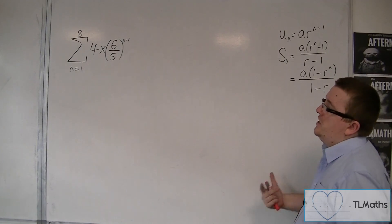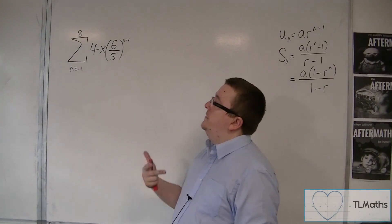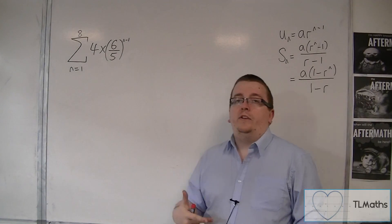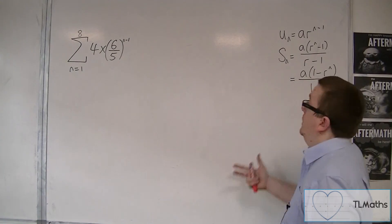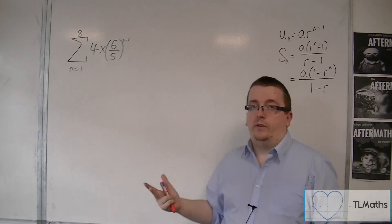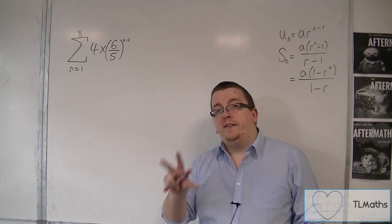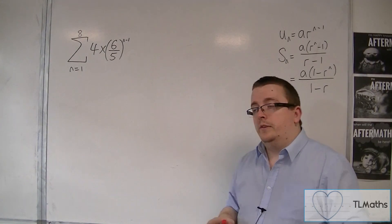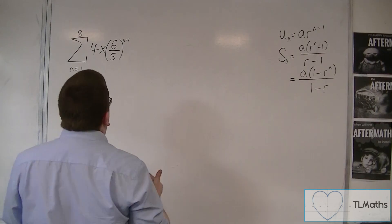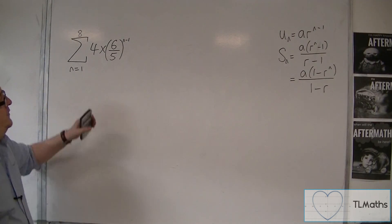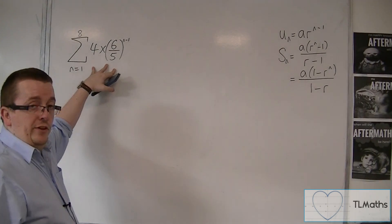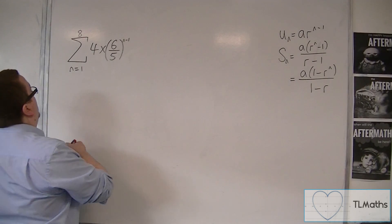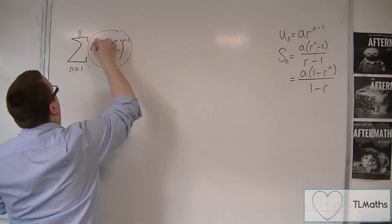Now, what you need to identify first is that we can do this using the sum of n terms of a geometric series. Okay, so we need to identify that it is geometric to start off with. The easiest way to do that is to look at the un, the nth term that you have been given. Because remember, this bit is always the nth term.